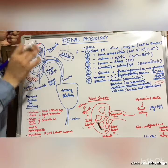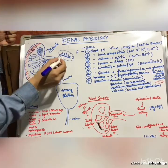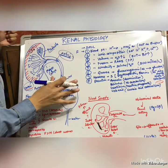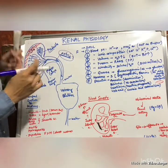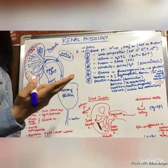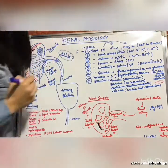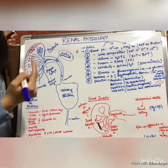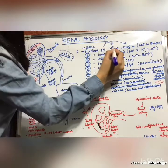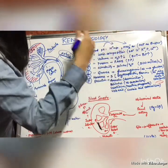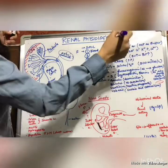Every day around 200 liters of fluid is filtered by the kidney. There are eight main functions. The first is blood pH. pH is determined by two ions: hydrogen ion (H⁺) and bicarbonate ion (HCO₃⁻). The kidney excretes hydrogen ions from the blood into the urine outside the body,